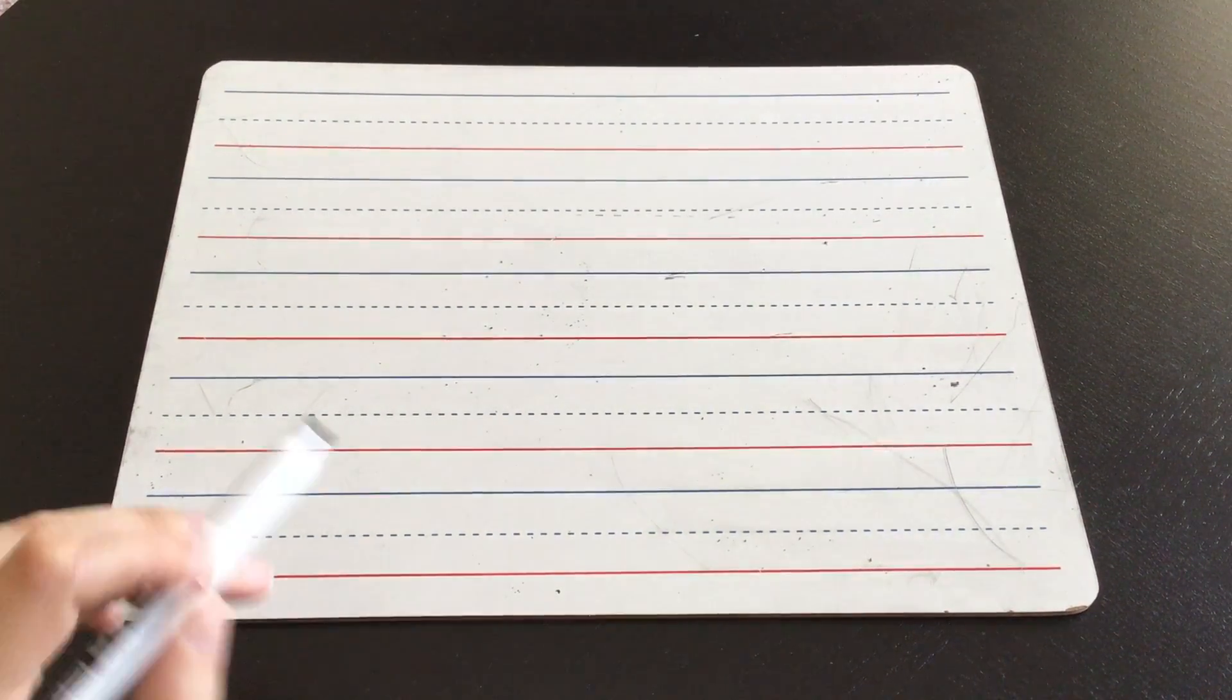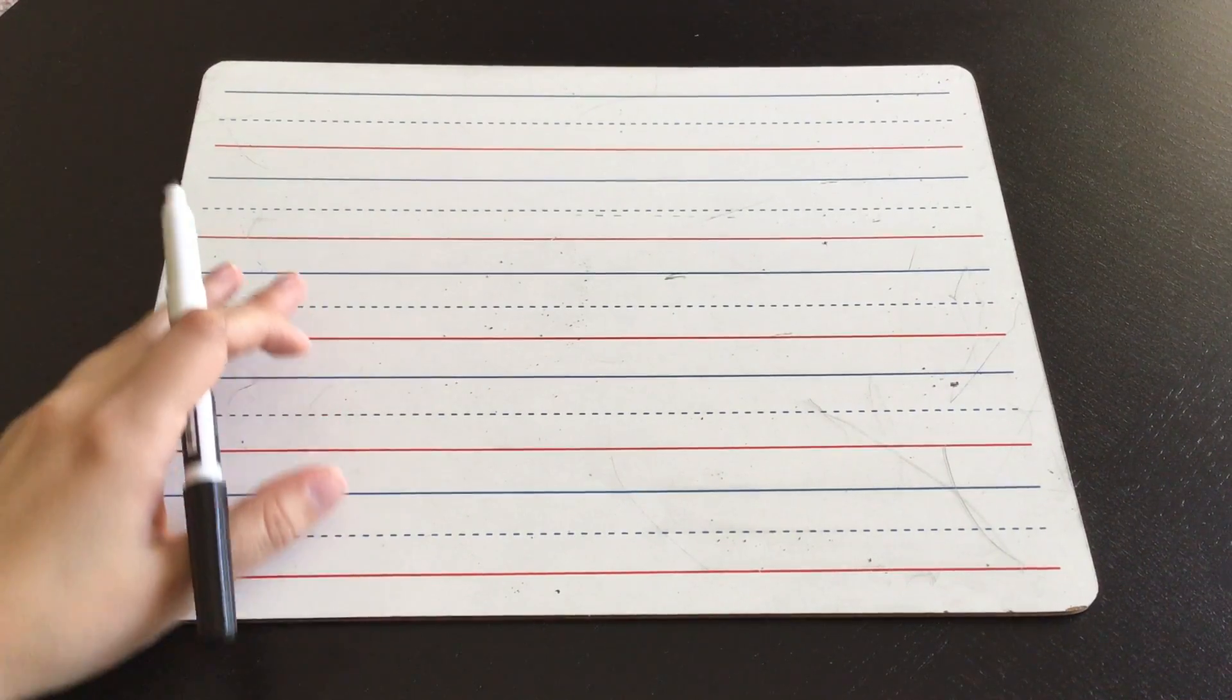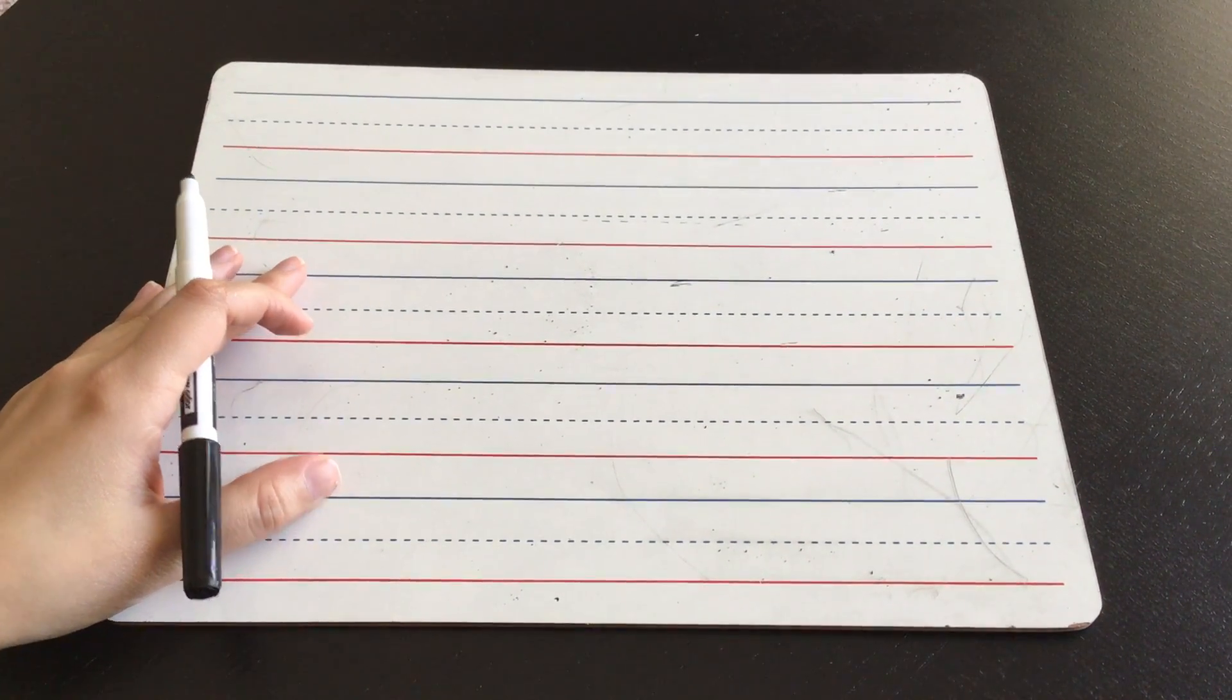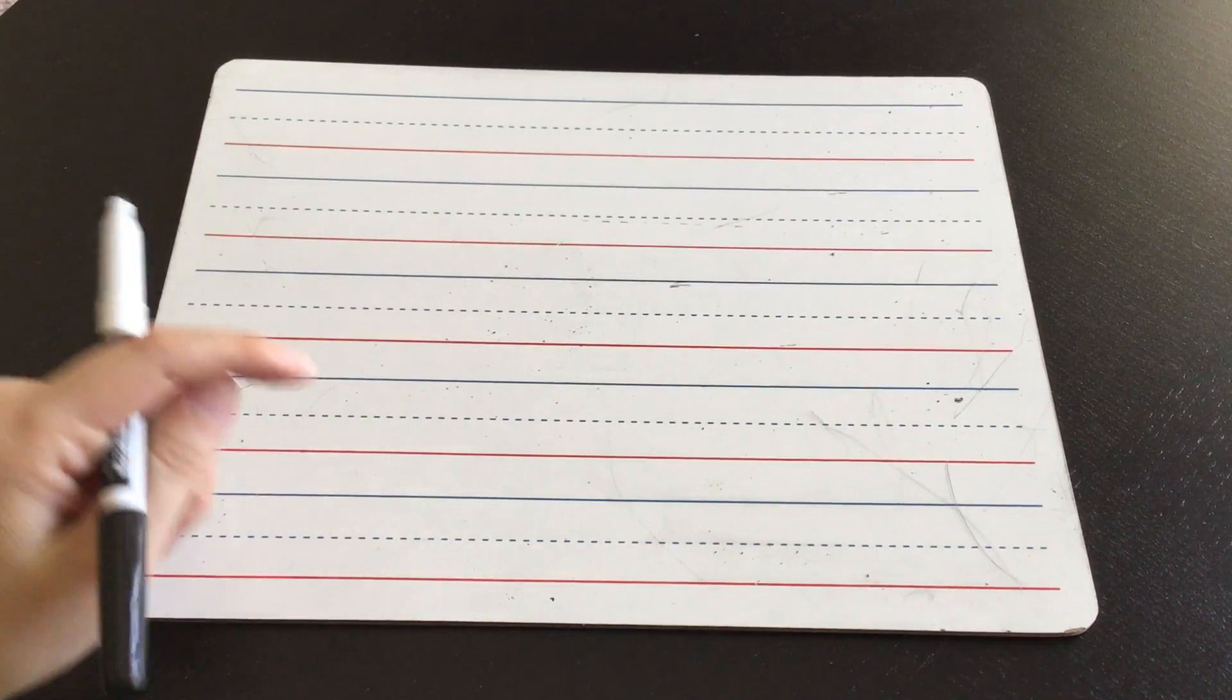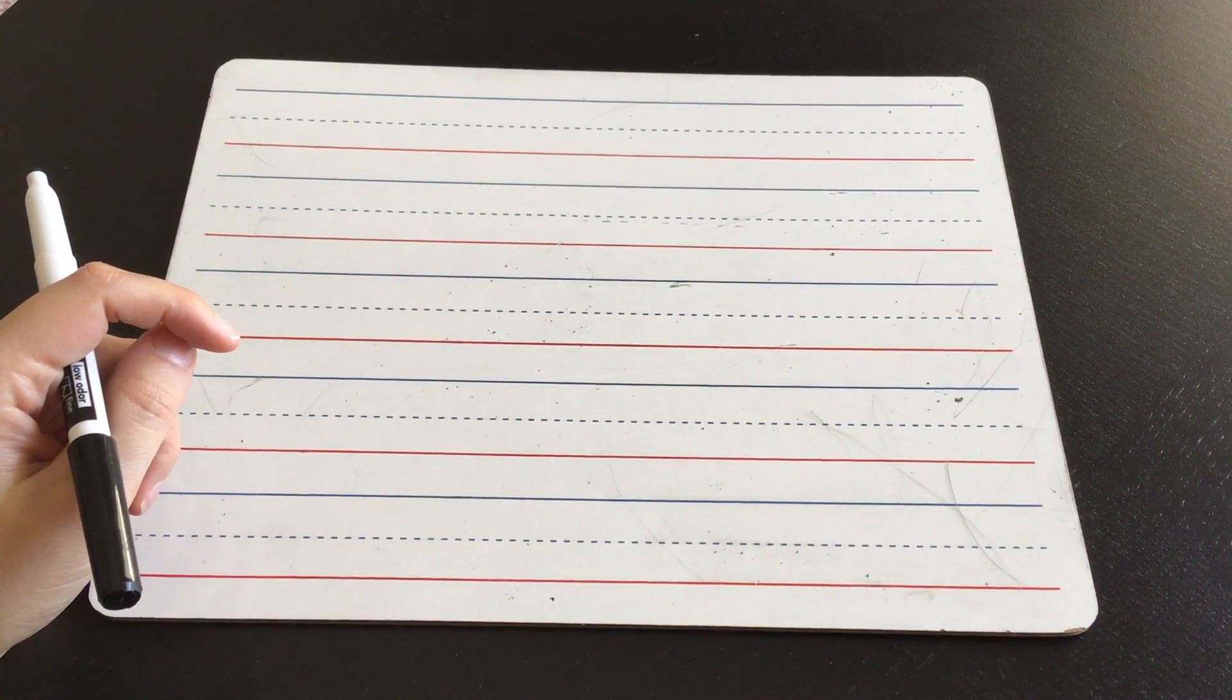All right, let's write the letter Q. Our crankiest Letterland friend, right? When we're writing her, we got to make that cranky face. Practice along with me at home. Use whatever you've got.